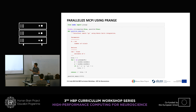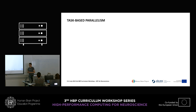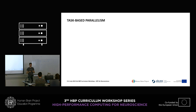This code parallelizes nicely with a simple prange — that's loop-based parallelism. If you ever hear about OpenMP, that's actually what it does. OpenMP is actually one of the schedulers that Numba can use. There is also task-based parallelism.